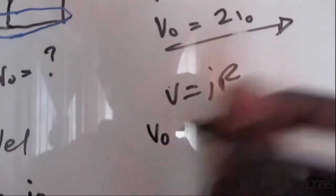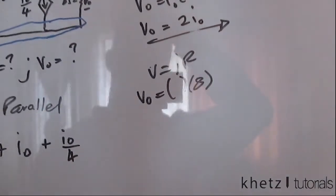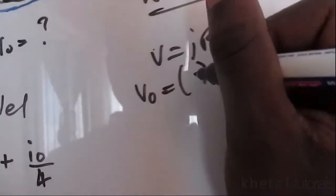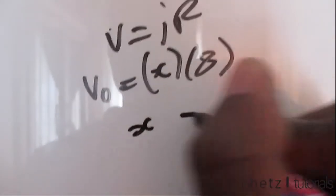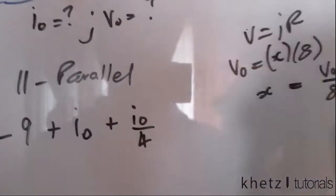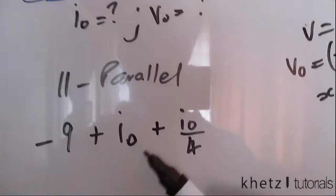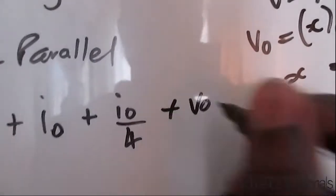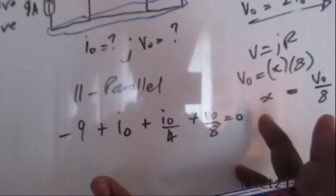v₀ is across there and now I want to find this current here, an unknown current. We can just call it x. What is the value of x? x equals v₀ over eight. So we can substitute v₀ over eight as this current here. It's going out and we said out is positive, so plus v₀ over eight equals zero. This is the sum of the currents going in and out that amounts to zero.